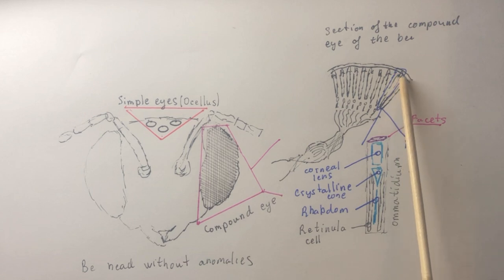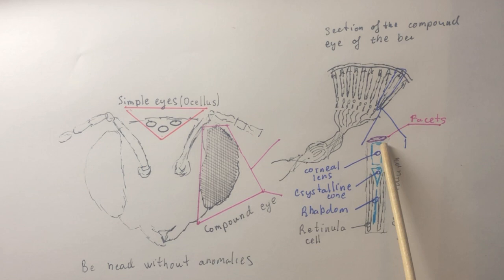In simple eyes, or ocelli, the cornea may also be present, but its structure is usually less complex than in faceted eyes.